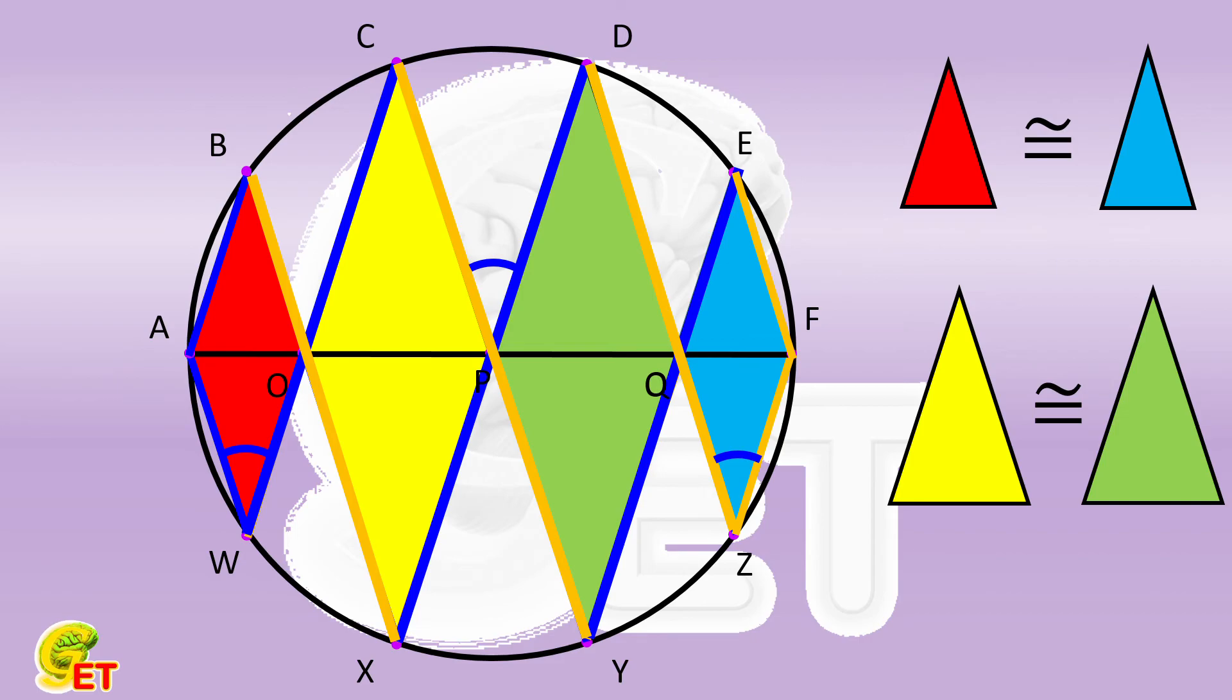Then the arcs CD is equal to one-fifth of the semicircle. The angle CPD is therefore equal to 180 degrees divided by 5, which equals 36 degrees.